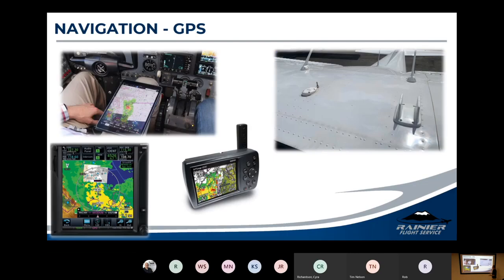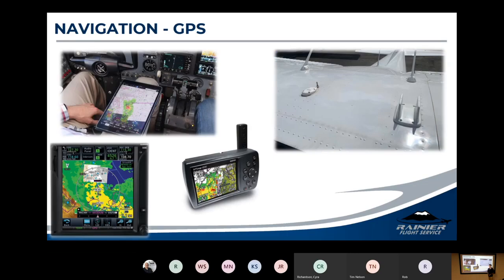We're moving on to global positioning systems. GPS prices are falling and the technology is getting better, all based on your phone, based on Google Earth. A Garmin 750 is a touchscreen display in a 162 — much like your smartphone, it gives you communications, navigation, the moving map, and weather. These are great systems.